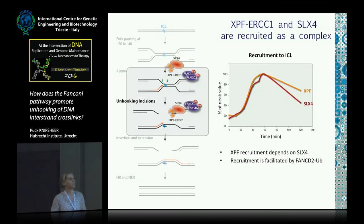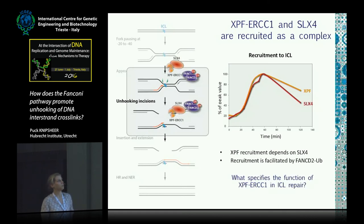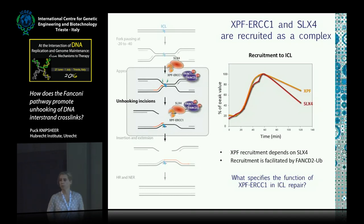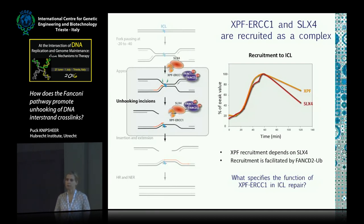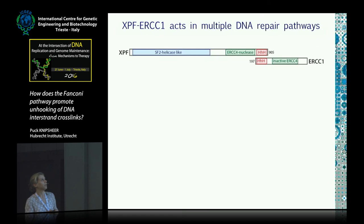We were then really intrigued by this direct role of XPF ERCC1 in ICL repair and asked how this role actually distinguishes from the role of this endonuclease in other DNA repair pathways. The reason we think this can be distinguished is because various mutations in XPF ERCC1 actually cause different disease phenotypes. XPF is a large protein that contains an N-terminal SF2-like helicase domain, for which we don't really know what it does except probably binding DNA.